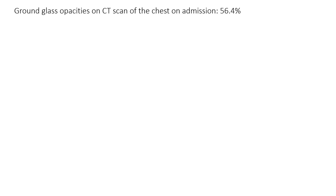This paper had CT scans of patients in the appendix of the paper if you would like to look at them yourself. 56.4% of patients had ground glass opacities on CT scan of the chest on admission. So what are ground glass opacities? Let's take a look at the CT scans they included in their paper.